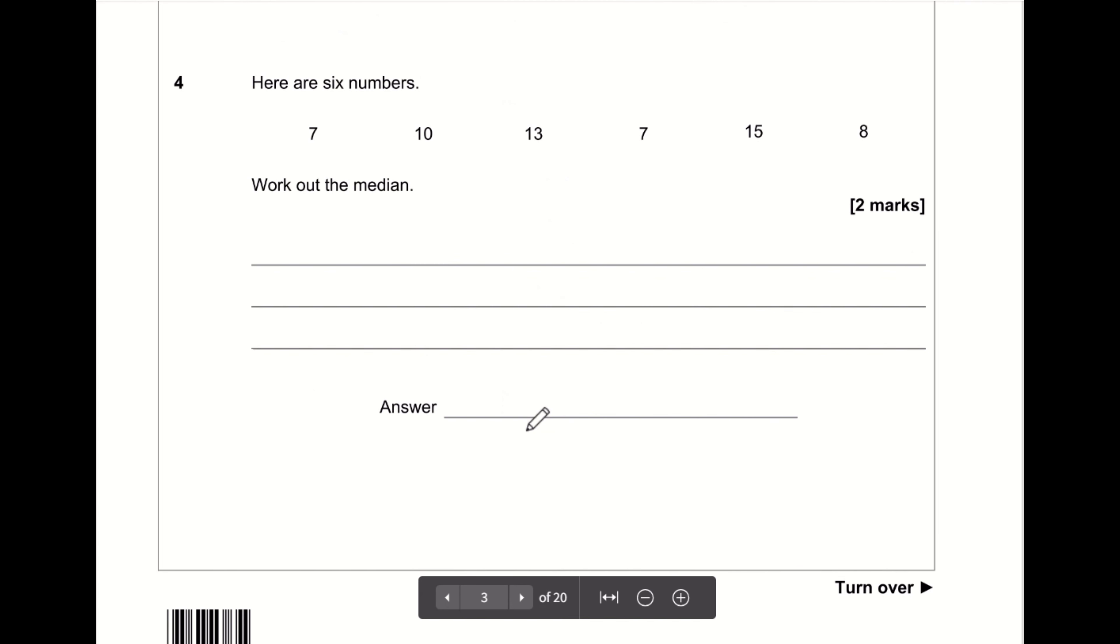Here are six numbers, work out the median. To work out the median, first of all, we need to put the numbers in order. So 7, 7, 8, 10, 13, 15. What I'm going to do to find the one in the middle is chop off one on the left and one on the right, and keep doing this until I get one in the middle. Unfortunately, I don't get one in the middle. I get two in the middle, and that's because we've got an even number of values. When we've got an even number of values and we get two in the middle, the median is exactly halfway between the two. Halfway between eight and 10 is nine. So the median is nine.